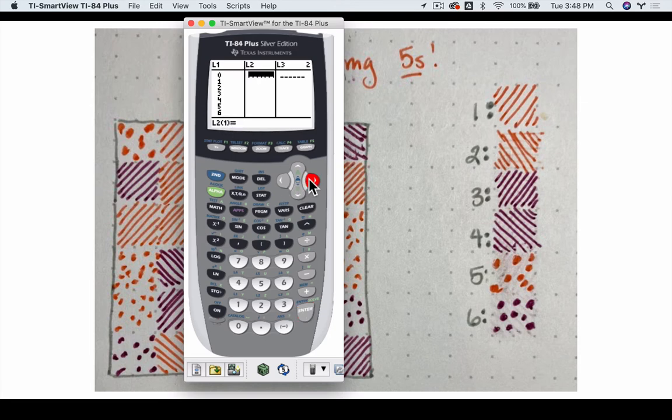I go over. If I have old data in my table, I go up. I hit clear and then enter to clear off that list. Mine's already clear. So I go up to L2.